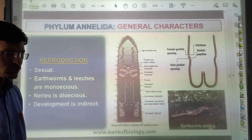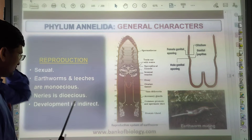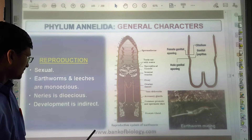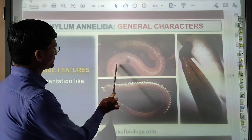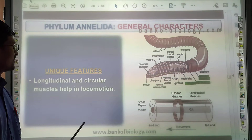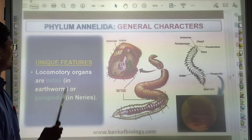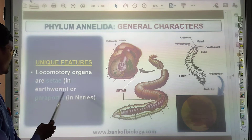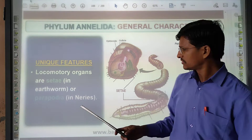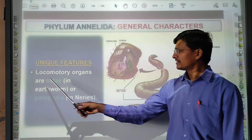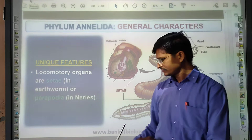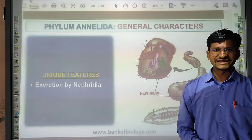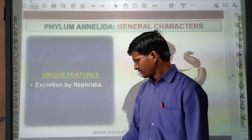Reproduction: sexual reproduction is present. Earthworms and leeches are hermaphrodites. Nereis is dioecious. Development is indirect. Unique features: segmentation is in the form of rings. Locomotory organs are setae — in the earthworm, setae are used. Parapodia are also used in Nereis. Excretion is by nephridia, which is the excretory unit in the earthworm and other annelids.